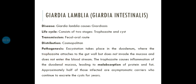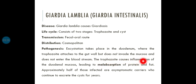The trophozoite attaches to the gut wall but does not invade the mucosa and does not enter the bloodstream. The trophozoite causes inflammation of the duodenal mucosa, leading to malabsorption of protein and fat, resulting in steatorrhea — fat excreted in stool — and hypoproteinemia.